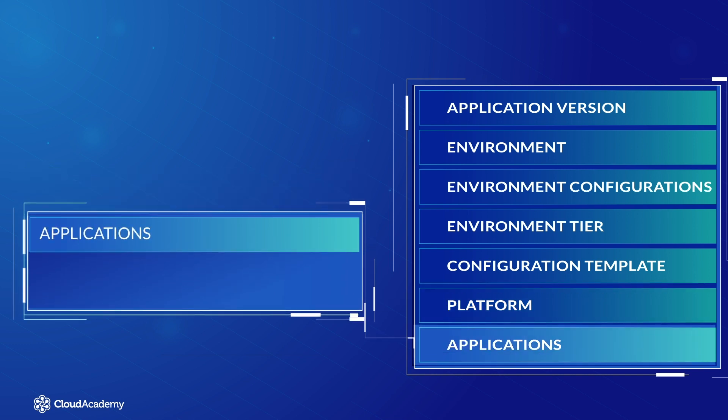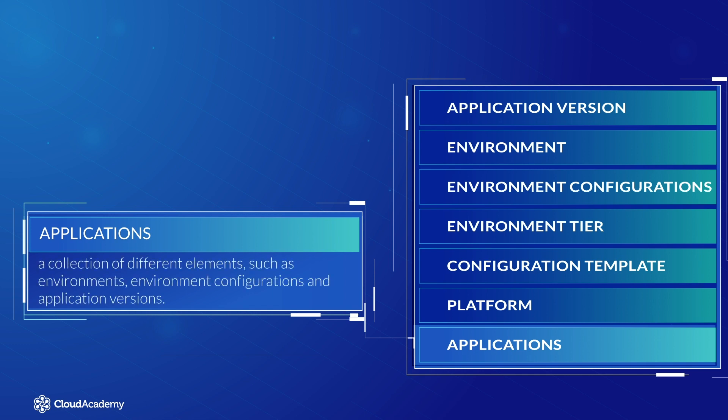Applications: within Elastic Beanstalk, an application is a collection of different elements, such as environments, environment configurations, and application versions. In fact, you can have multiple application versions held within an application.